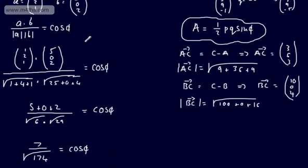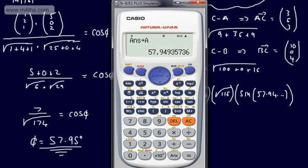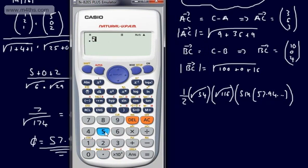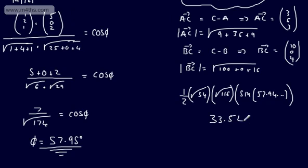Plugging into the area formula: Area = ½ × √54 × √116 × sin(57.95°). We can combine the roots: ½ × √(54 × 116) × sin θ. Evaluating this in the calculator gives 33.54 square units. So the area of triangle ABC is 33.54 units squared.